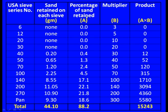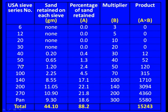The percentage of sand retained in each sieve: sieve 40 gives 0.4%, sieve 50 gives 1.3%, sieve 70 gives 2.4%, sieve 100 gives 4.5%, sieve 140 gives 17.1%, sieve 200 gives 22.1%, sieve 270 gives 21.8%, and the pan gives 18.6%.